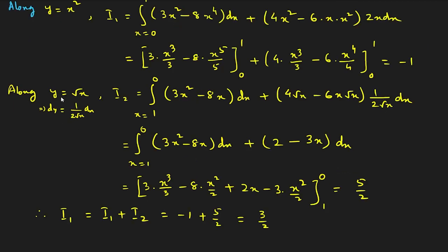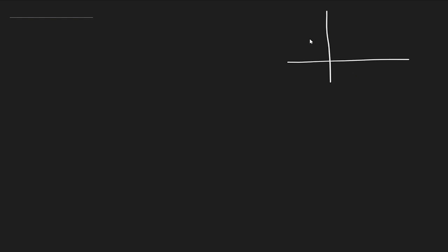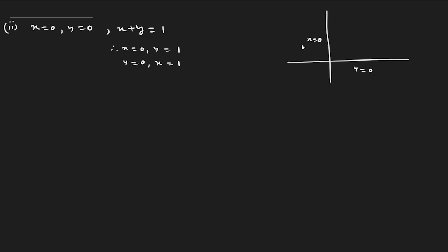Now let us do part 2 of example 2. Here the curve is completely different: x=0, y=0, and x+y=1. x=0 is the y-axis, y=0 is the x-axis, and x+y=1 is a straight line. Substituting x=0 gives y=1; substituting y=0 gives x=1. So the line connects (0,1) and (1,0), forming a triangular region.